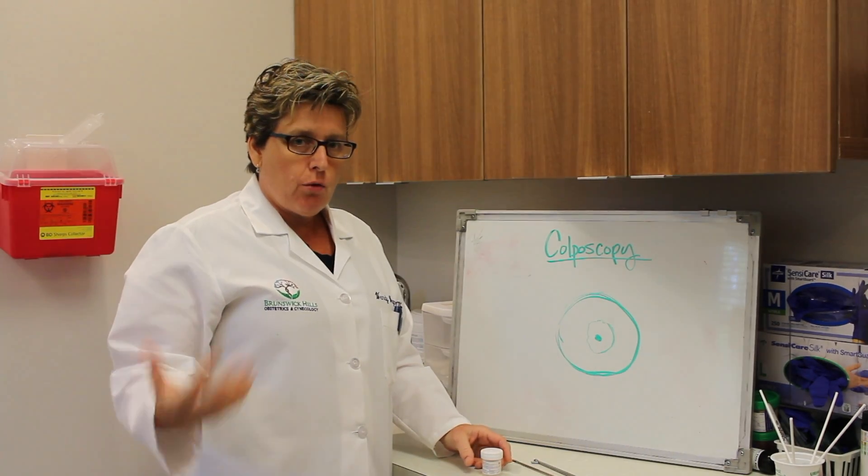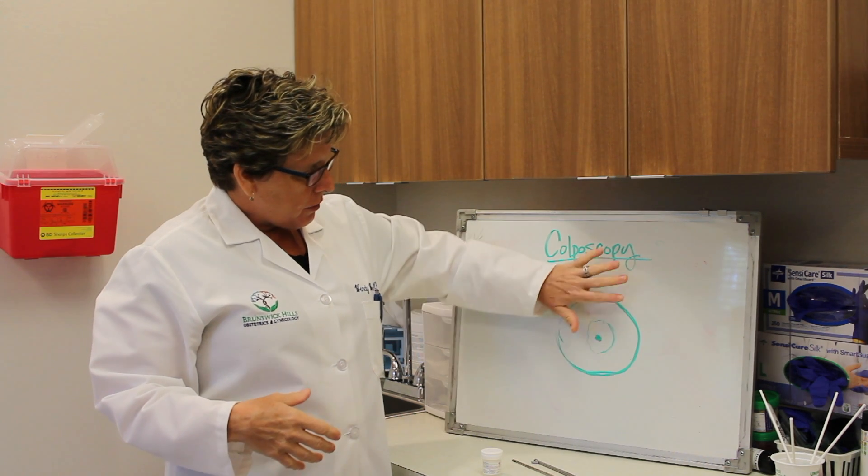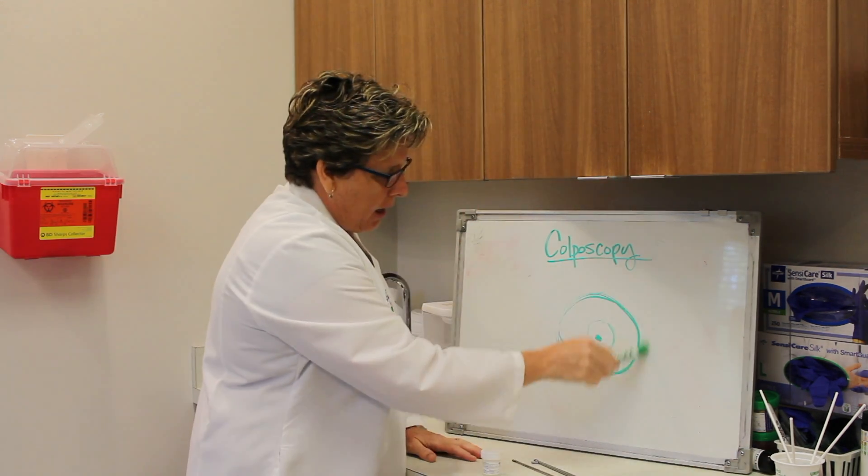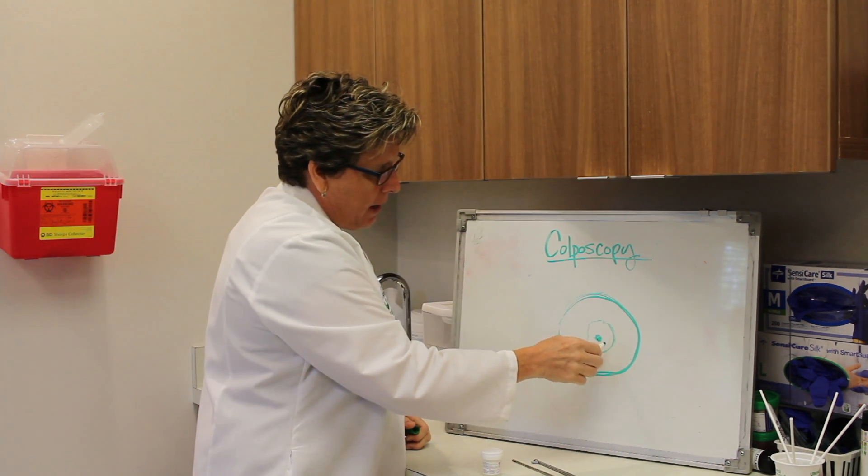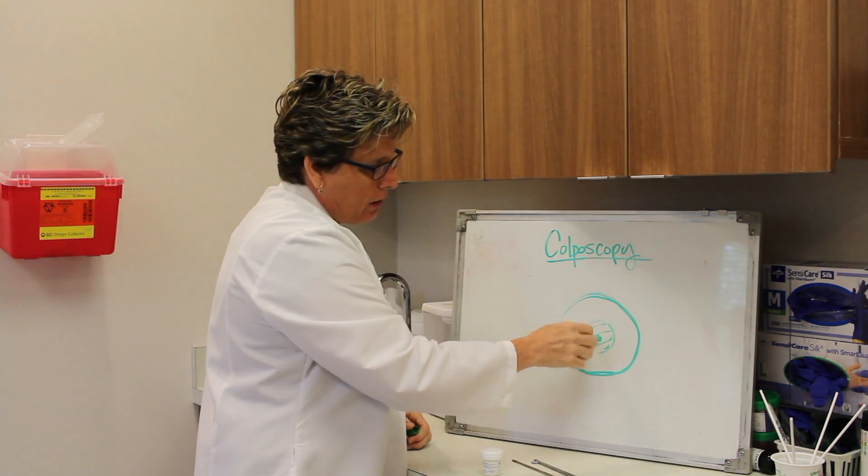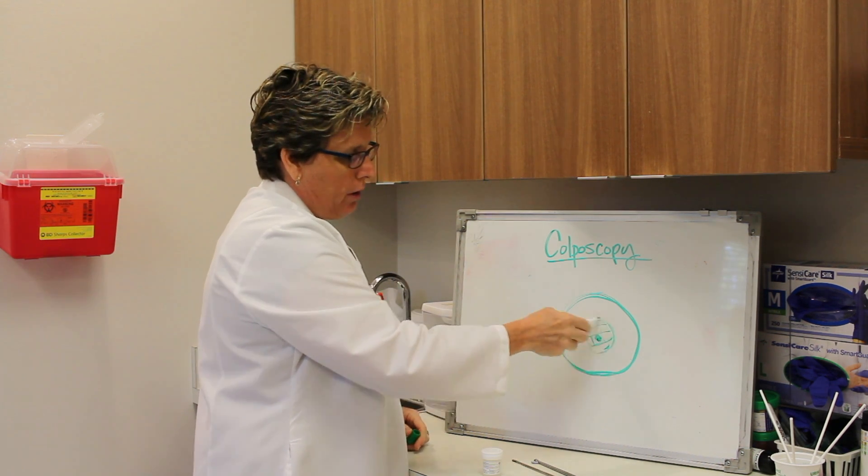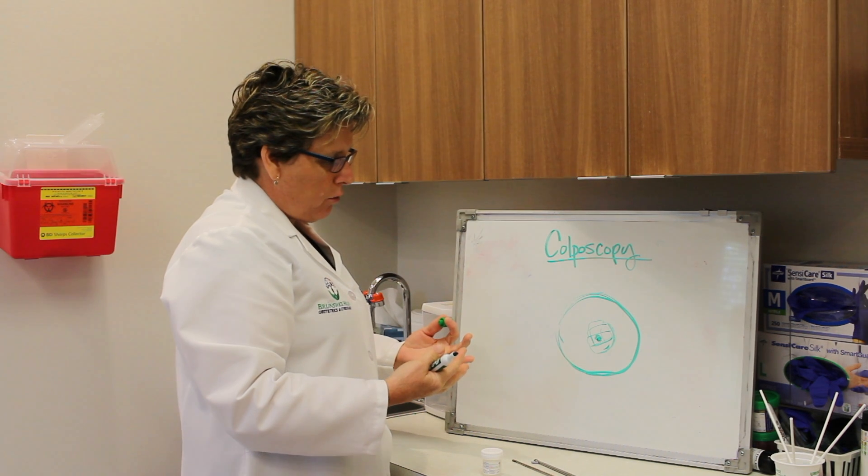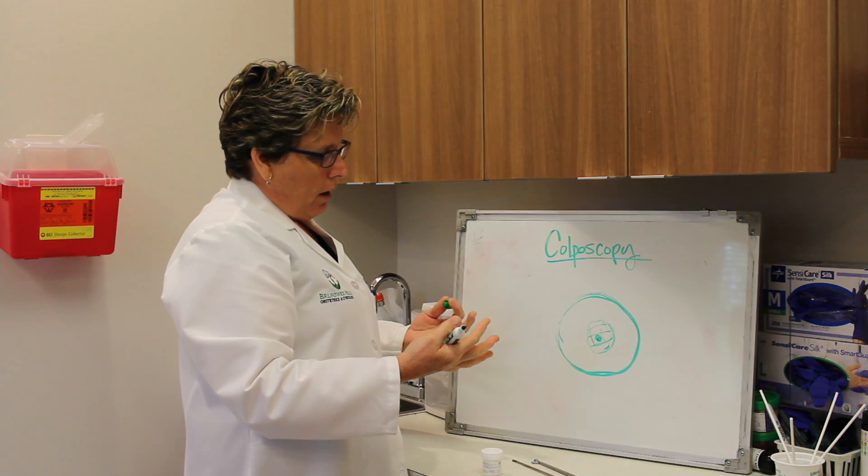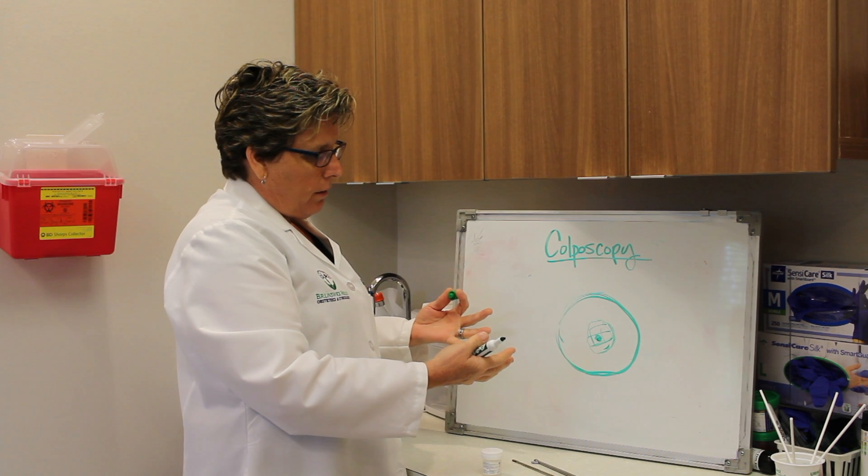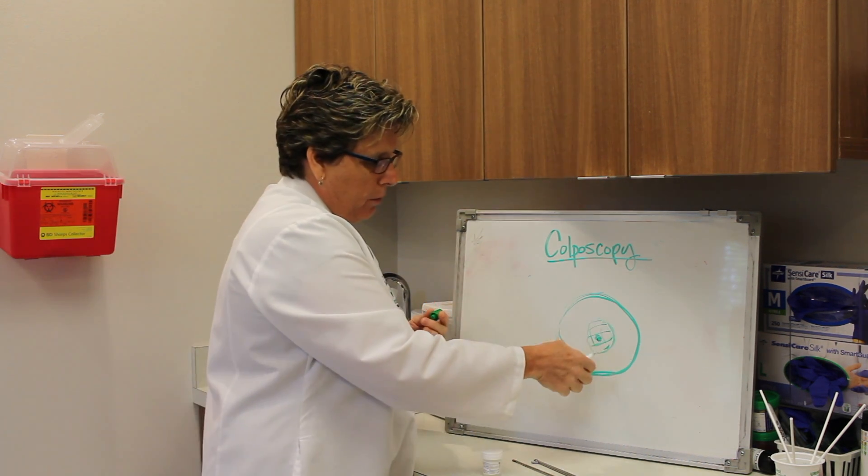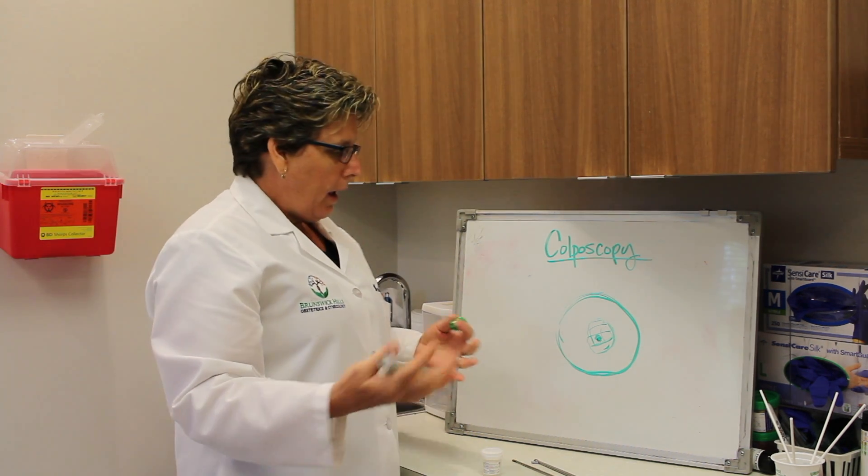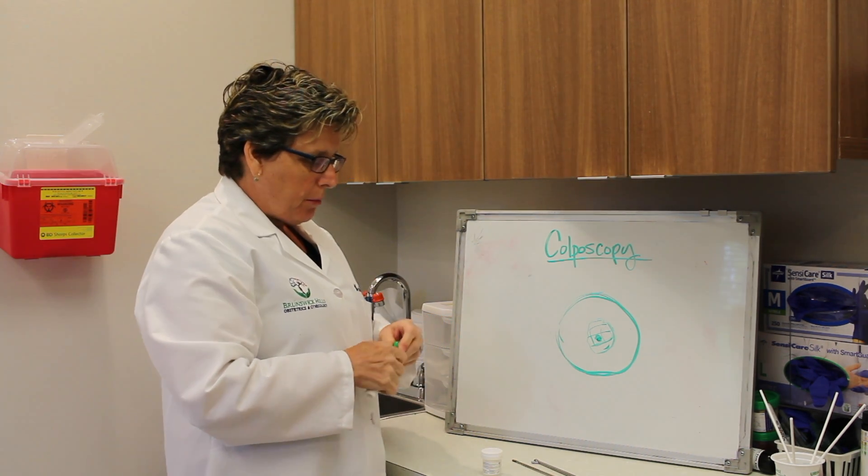While we're looking at the cervix through the scope, the surface of the cervix kind of looks like this. This is the outside. This is the opening of the cervix, which we call the os. And there's something here that we call a transformation zone. This is where the majority of the abnormal cells occur because of the cell turnover at this point. The colposcopy is adequate if we can see this entire transformation zone. Sometimes there are abnormal areas that are white, and in that case we take biopsies of those areas.